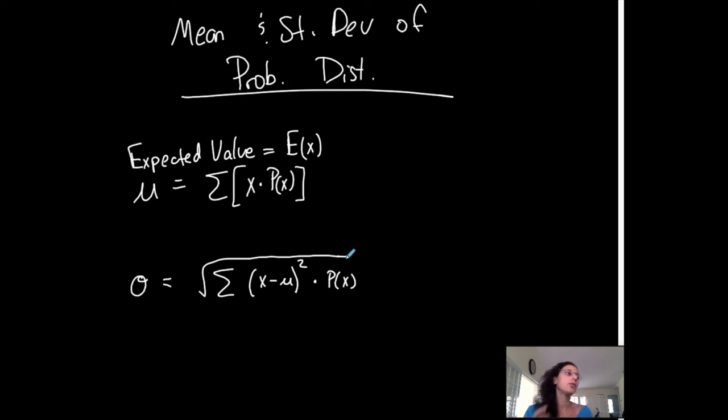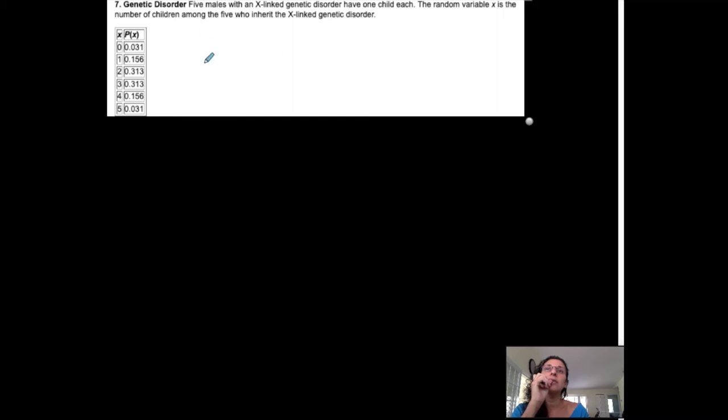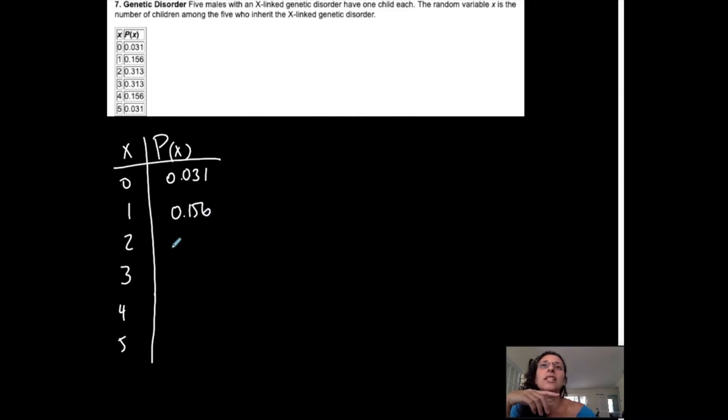So I'll show you how to use these two formulas. Let's use this table. I'm going to write it down here so I can extend it, make it nice and big. So I have 0, 1, 2, 3, 4, or 5. Six total outcomes. The corresponding probabilities: 0.031, 0.156, 0.313, 0.313, 0.156, and 0.031.